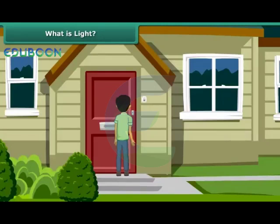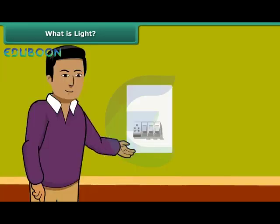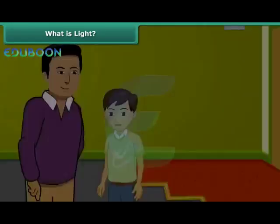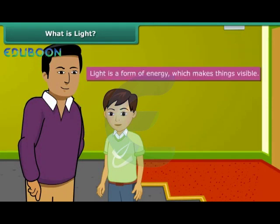It's night and you step inside the house. There is darkness all around and everything appears black. You can hardly see anything. Your father switches the light on and now you can see everything clearly. It means light enables viewing. Therefore, light is defined as a form of energy which makes things visible.